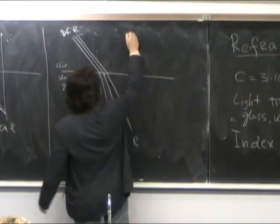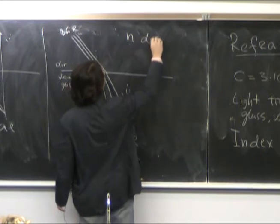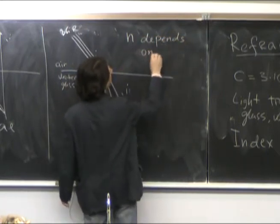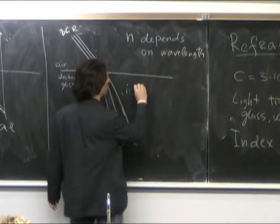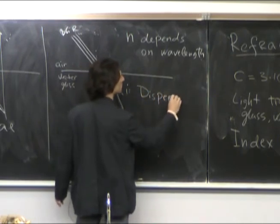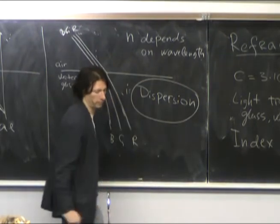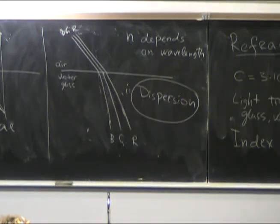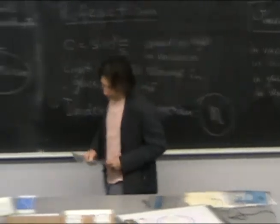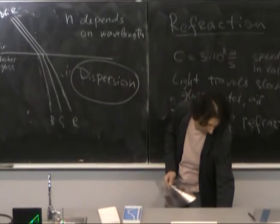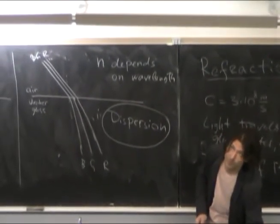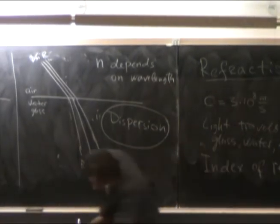So the index of refraction depends on the color, on the wavelengths. And this is called dispersion. And this is a very nice phenomenon. It's responsible for rainbows.